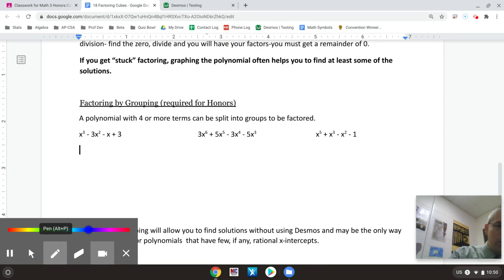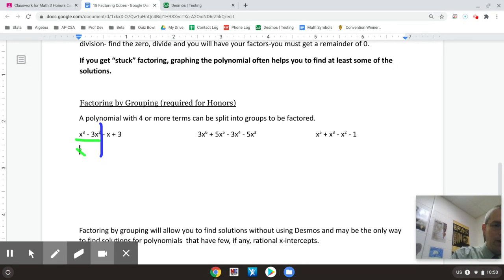So if I'm going to factor with one of these cubic polynomials that has a lot of terms, grouping is a good way to do it. And the most common way to group is to split it in half and say, what can I divide out of the first half and the second half? So when I try to divide a GCF out of the first half, the first half can be divided by an x squared. So I take out a GCF of x squared out of that first half, and that leaves me with an x minus three.